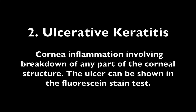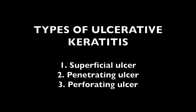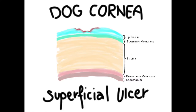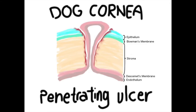The second type is ulcerative keratitis — corneal inflammation involving breakdown of any part of the corneal structure. As the stroma is exposed, fluorescent dye is retained and can be used to show the corneal ulcer clearly. Ulcerative keratitis can be split into three types: superficial ulcer, penetrating ulcer, and perforating ulcer. A superficial ulcer involves only the epithelium. In a penetrating ulcer, the stroma has been penetrated and Descemet's membrane bulges outward due to pressure from the liquid inside the eye.